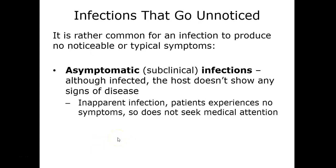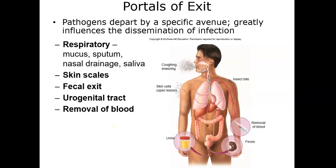Asymptomatic infections, also called subclinical infections, are ones where even though you're infected, you're not experiencing any signs or symptoms — it's inapparent, and you often won't seek medical attention because there are no symptoms present. The portal of entry usually mirrors the portal of exit, so the way a microbe comes in is typically the way it will go out.